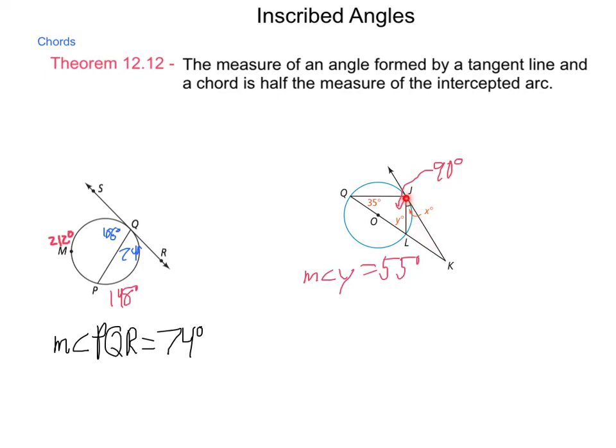Well, the arc that's intercepted for those two is the same as the arc intercepted by angle JQL, which means that they have the same measurement.